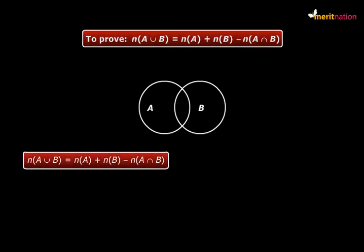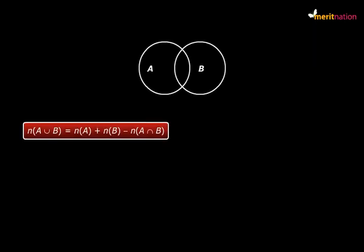And this proves the formula. In fact, let me also give you a special case of this formula. What happens when A intersection B is empty? That is, sets A and B do not have any common elements. They are disjoint sets. And they look like this.